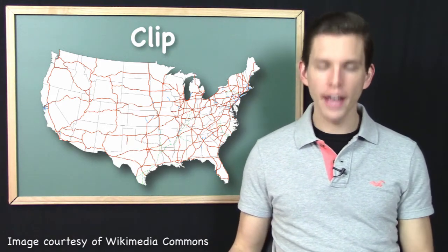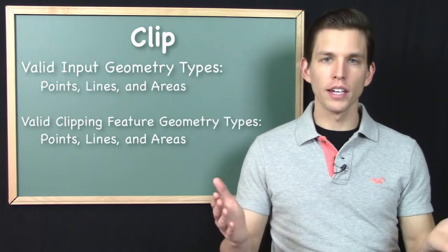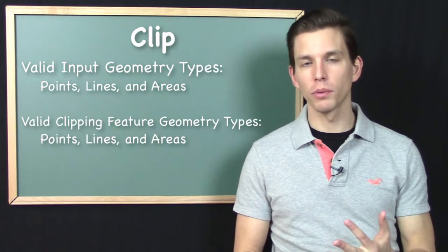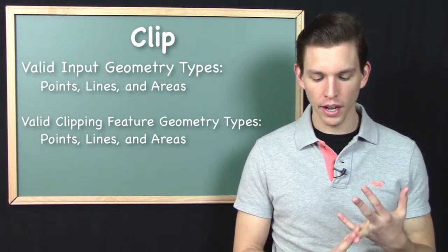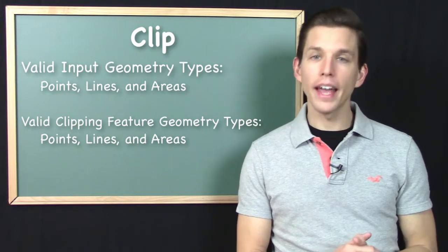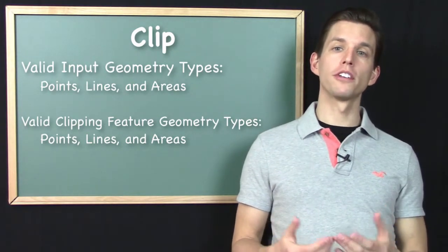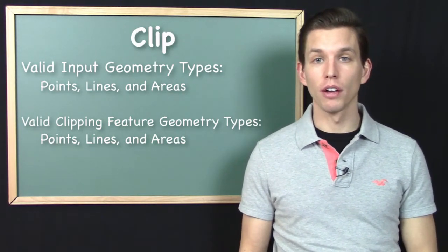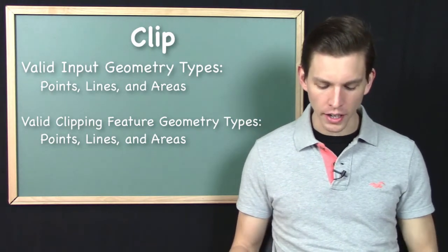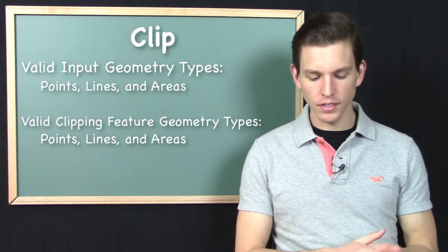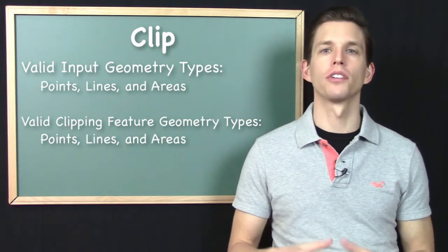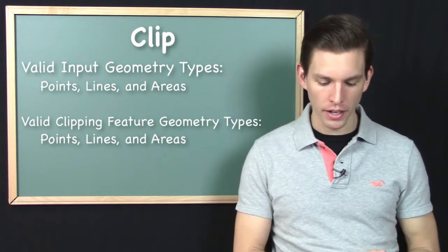Let's look at what the valid inputs are for the clipping tool. The input data that you can clip can be points, lines, or areas — we can execute clipping operations on all three kinds of geometry. As far as the clipping feature goes — the one used to do the clipping — it's pretty common to think about that as an area, some kind of polygon. When thinking about having an area of interest, thinking of the clipping feature as a polygon is very natural.